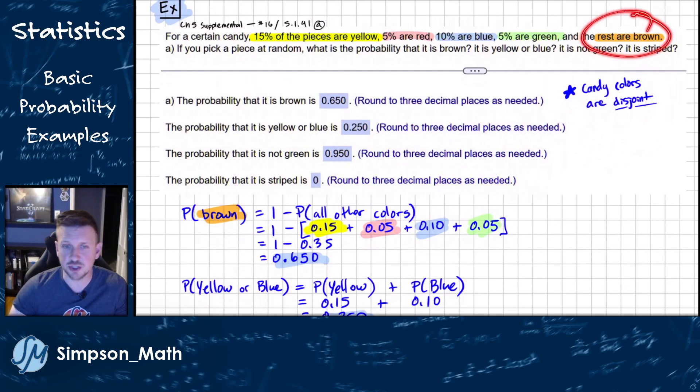So what's the probability that it's brown? Well, since it says the rest are brown, this is just like the last question. I need to add up all the colors. So 15 plus 5 plus 10 plus 5, and when I do, I get 35, subtract that from one and we get our 65%. I didn't bother to write down all the details because honestly, if I'm working this question, if I'm not needing to show my work, I'm just going to add them up and subtract from one.